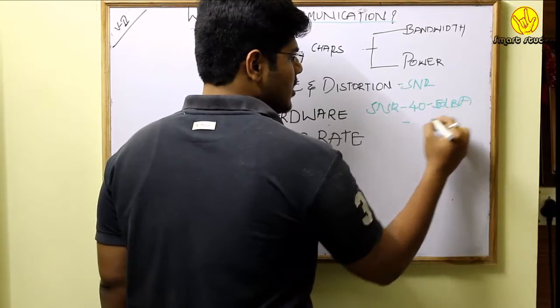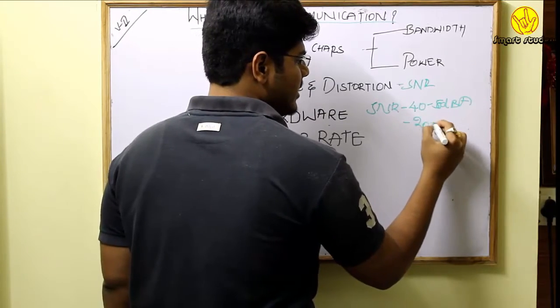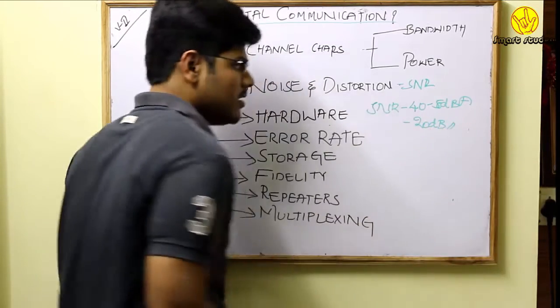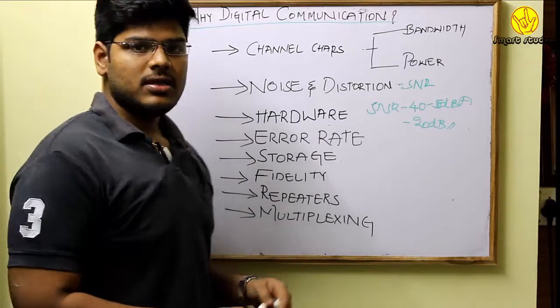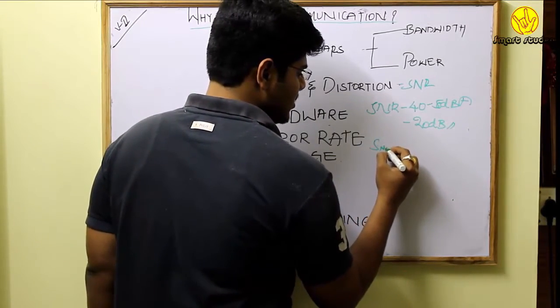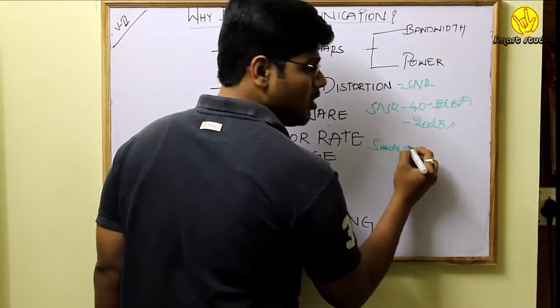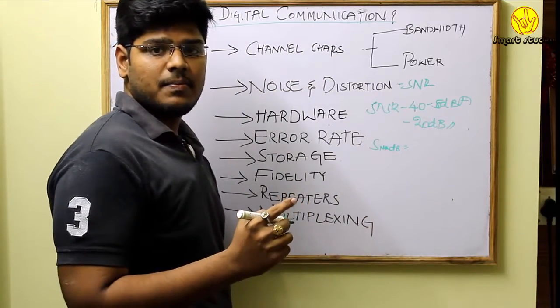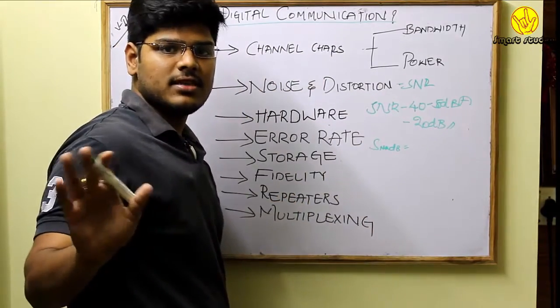So we are going to see SNR in detail. SNR is measured in decibels because it is the ratio of the signal voltage to that of the noise voltage, that is 20 log Vs by Vn to the base 10.